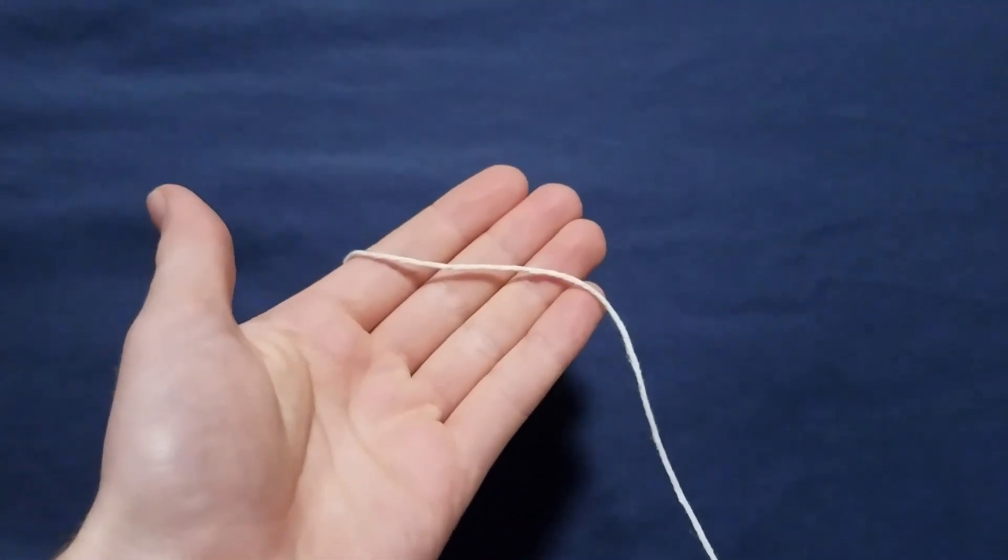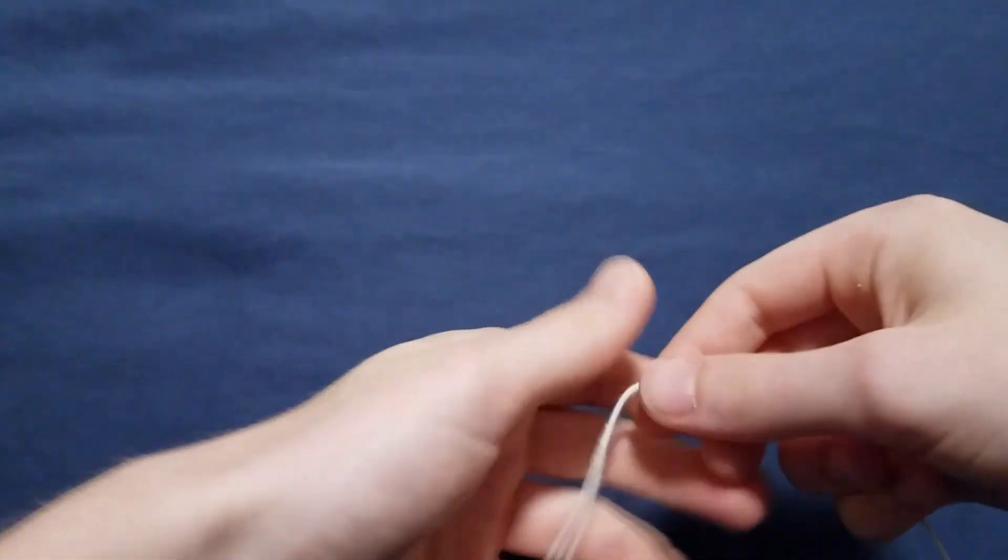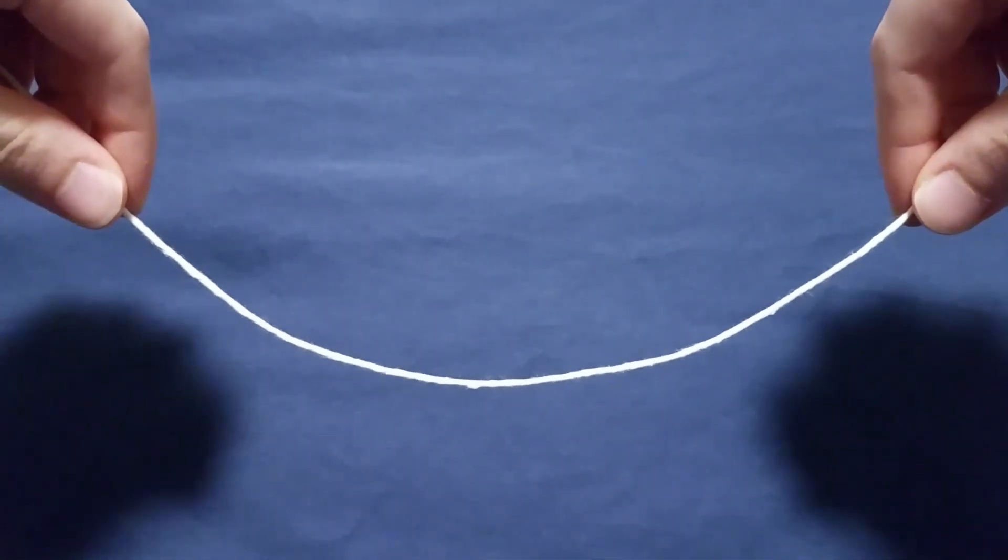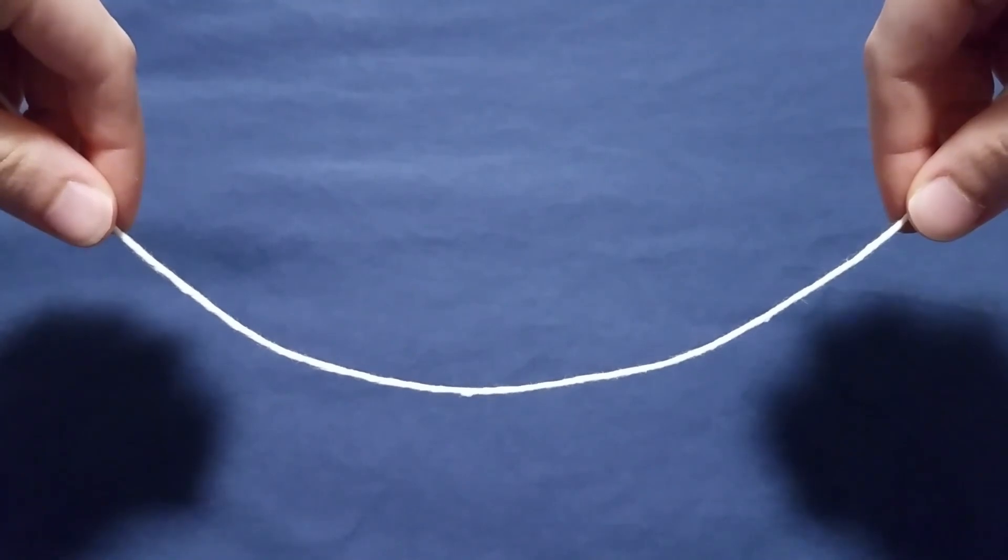Take a piece of string, hold each end with your fingers, and let it dangle freely. What's the shape that it takes? It looks a bit like a parabola, but it turns out that it's something different.